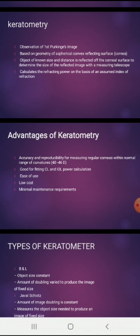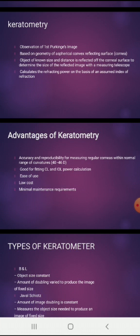In keratometry, another important thing is that we consider the corneal surface as a convex reflecting surface. We can measure the corneal radius of curvature by using the object size and image size. Either we can make the object constant and the image variable for measuring the radius of curvature, or we can make the image constant and the object variable for measuring the keratometer reading.